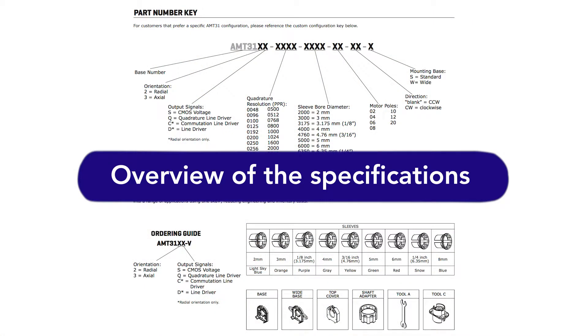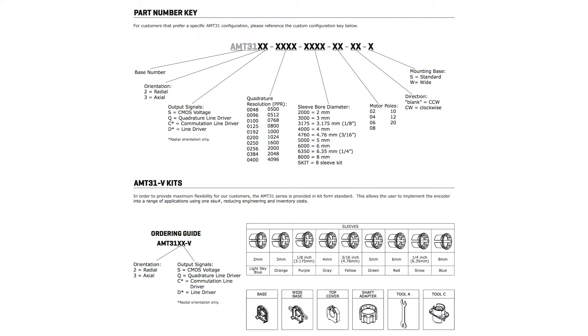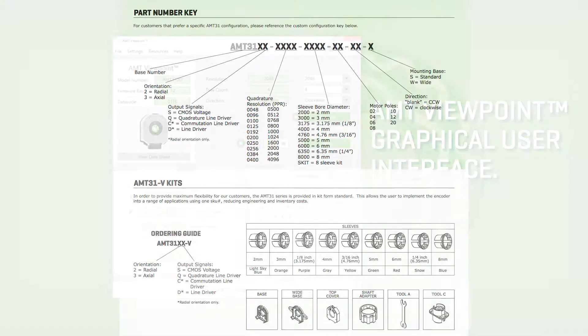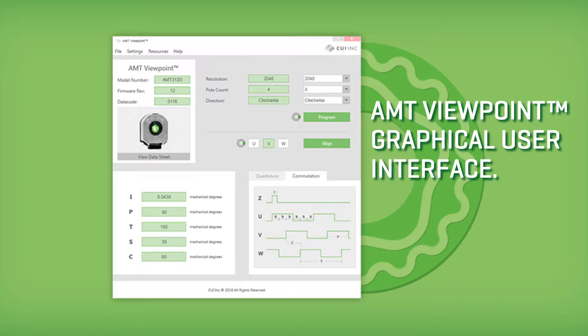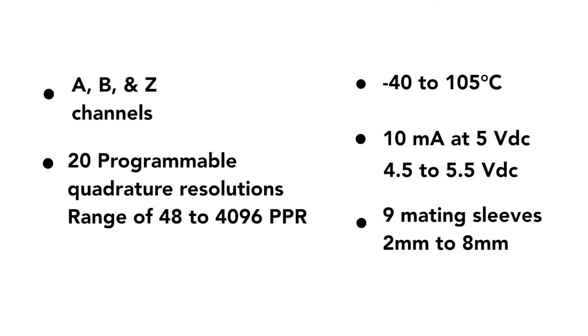Now for an overview of the specs. Featuring three-phase UVW commutation signals, the AMT31 series output can accommodate brushless DC motors with 2 to 20 poles, programmable via CUI's AMT Viewpoint graphical user interface. The series also offers supplementary A, B, and Z channels for servo positioning and startup sequences.